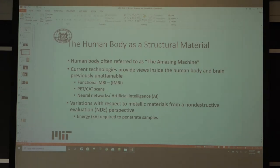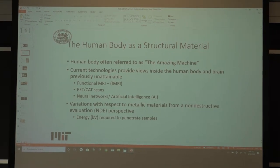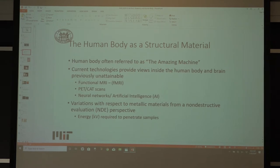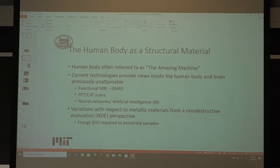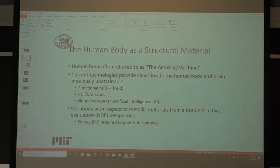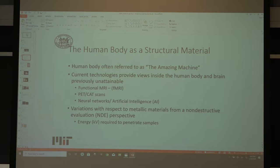The human body is often referred to as the amazing machine. Current technologies that have really advanced science with respect to biological engineering include functional MRI, where you can scan the brain and see actual different lobes light up under different response modes. You also have PET scans and CAT scans, which in industry are mostly related to computed tomography for aerospace and other components — analogous to medical scanning.